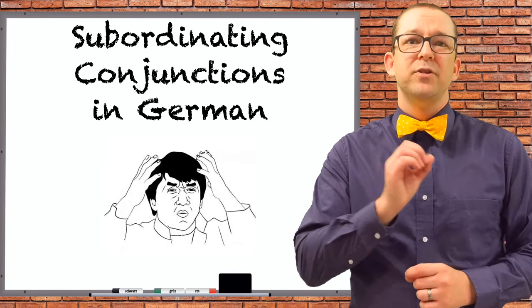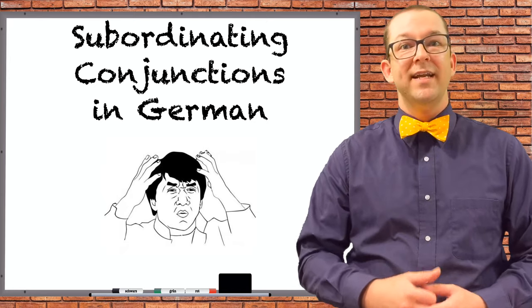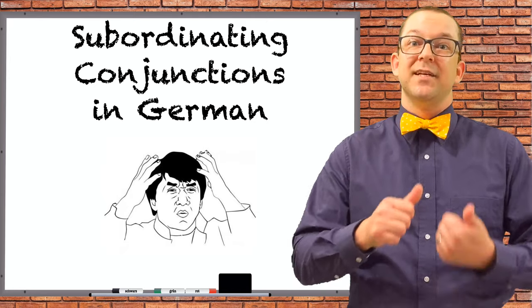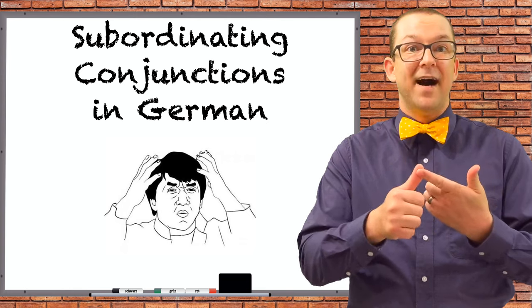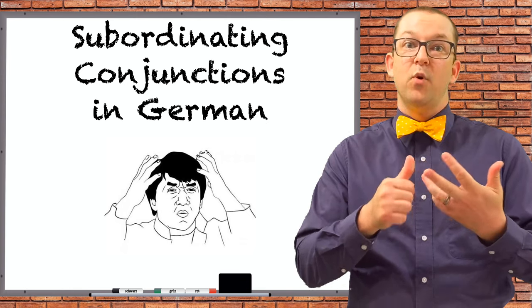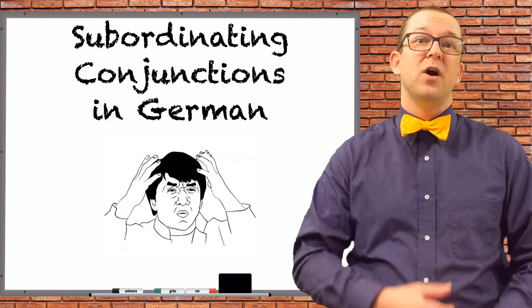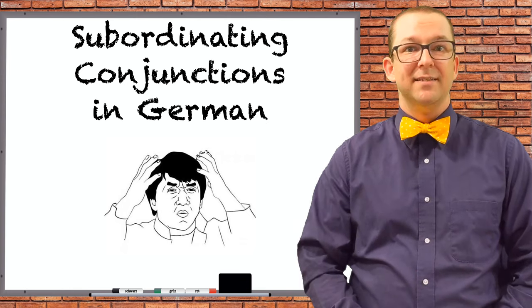If you want to learn how to use subordinating conjunctions in German, such as dass, weil, ob, wenn, and more, you have come to the right place.